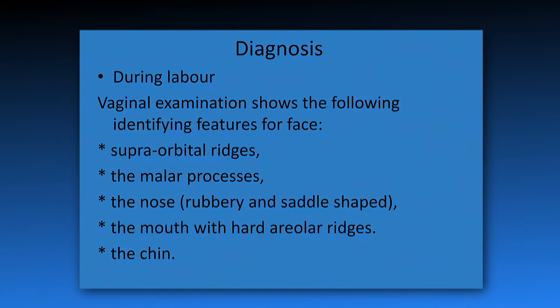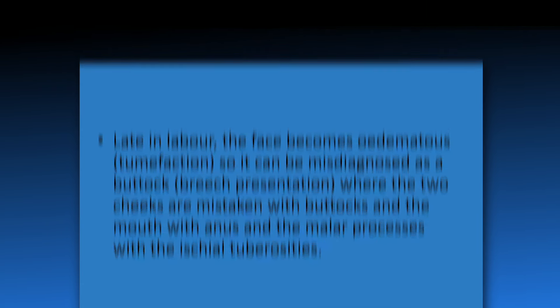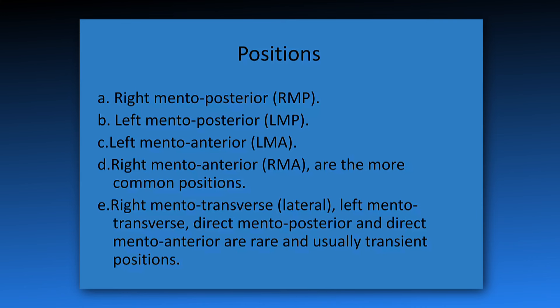During labor, vaginal examination identifies the following features of the face: the supra-orbital ridge, the malar process, the nose, the mouth with hard alveolar ridges, and the chin. Late in labor the face becomes edematous, and it can be misdiagnosed as buttocks, where the two cheeks are mistaken for buttocks, the mouth for the anus, and the malar process for the ischial tuberosities.